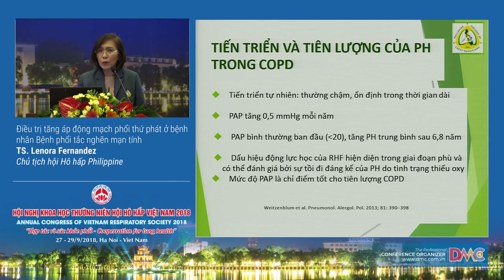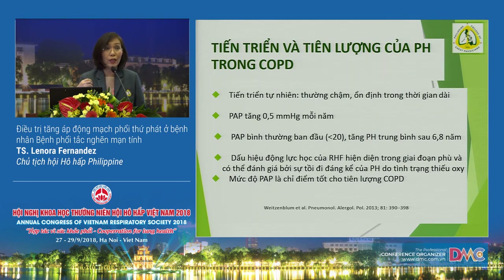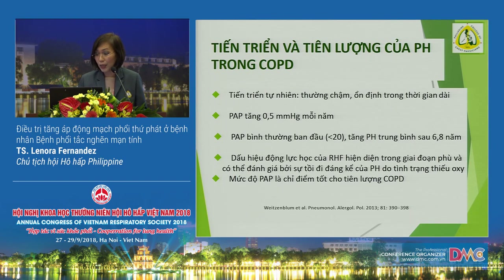Pulmonary hypertension develops in COPD very slowly — some will not even reach significant levels. The pressures can increase as little as 0.5 mmHg per year. In cases where they do develop pulmonary hypertension, it usually occurs about 7 years after the diagnosis of COPD. But once it is present, that means a poorer prognosis for our COPD patient.